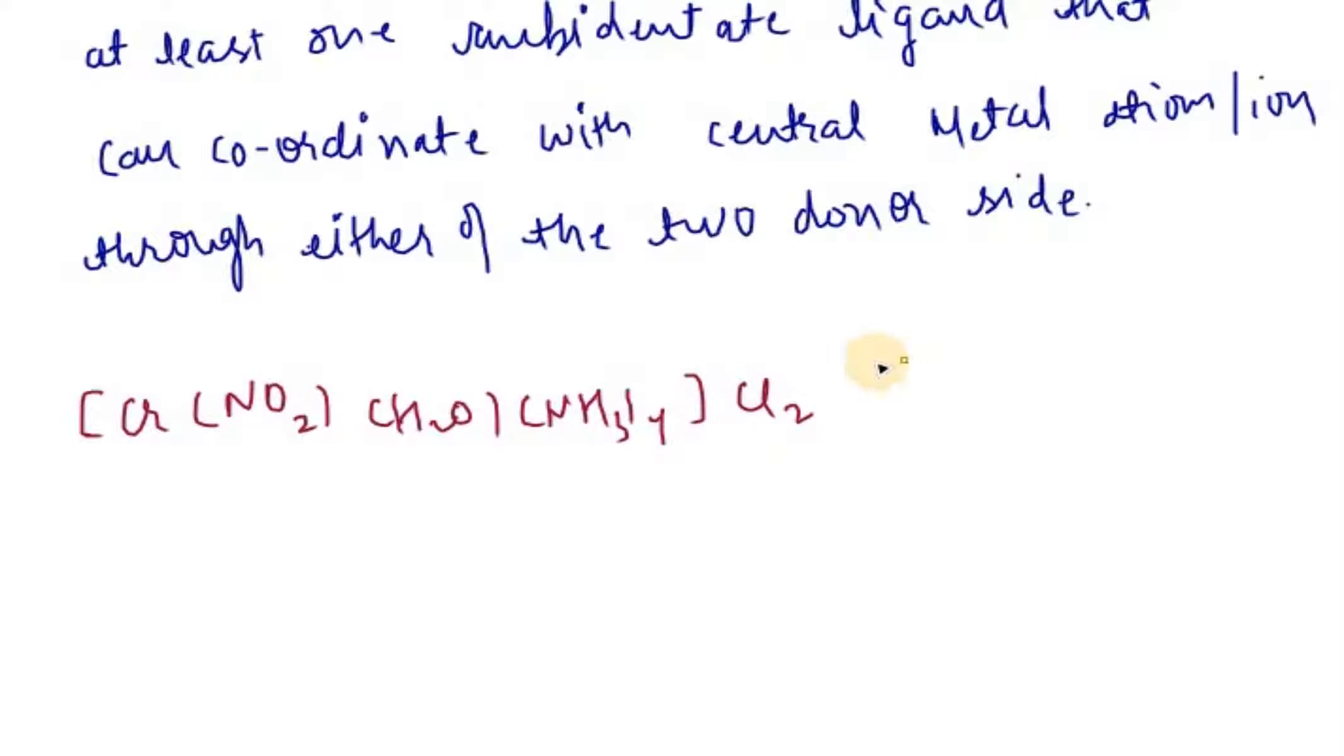If we talk about this compound, it has possible linkage isomers. Second, it also has the possibility of hydrate isomers. The possibility of ionization isomers also arises.